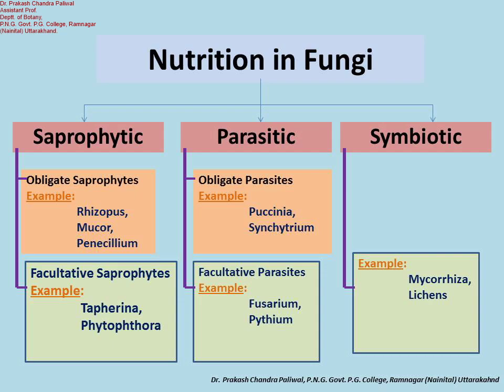Mycorrhiza and lichens are examples of symbiotic relationships. In lichens, fungi are mutually associated with algal filaments, while in mycorrhiza, the fungal component is mutually established within the roots. In both symbiotic relationships — mycorrhiza as well as lichens — both partners are benefited. In this manner, fungi can survive and absorb nutrients. That is all about the mode of nutrition in fungi.